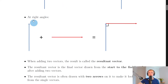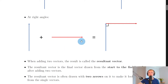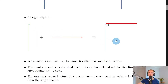At right angles we do a similar thing. We've got our first vector going this way, and if we want to add a vector going to the right, we add them nose to tail — taking the tail of the second one and adding it onto the nose of the first. Moving this over so the tail joins onto the nose, we end up with a right angle where the two vectors join.